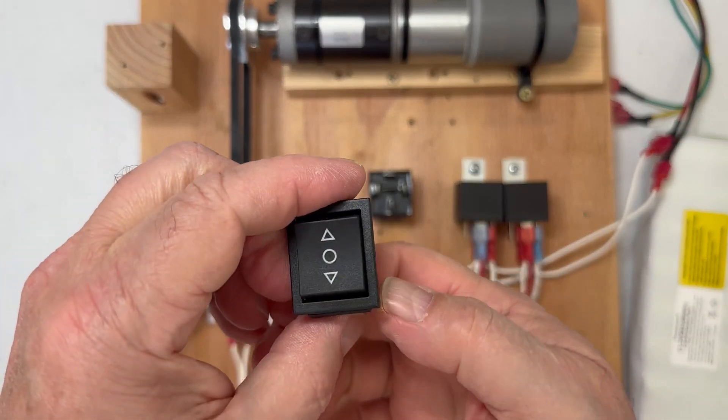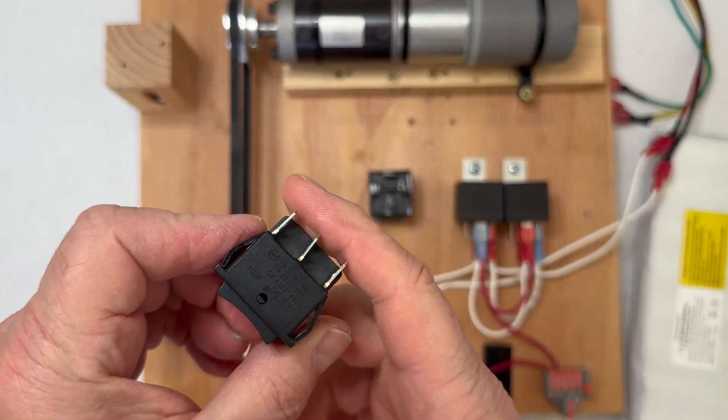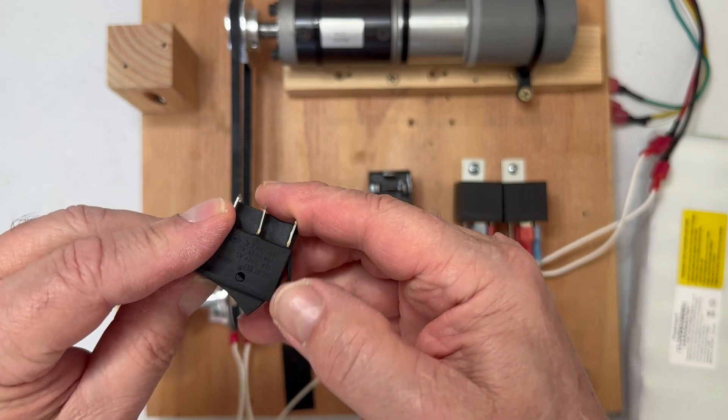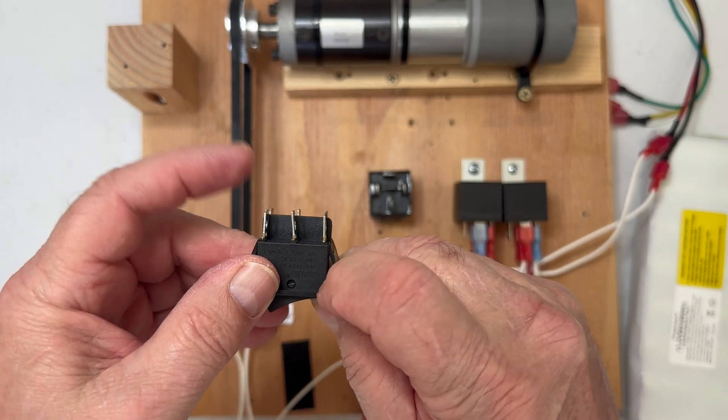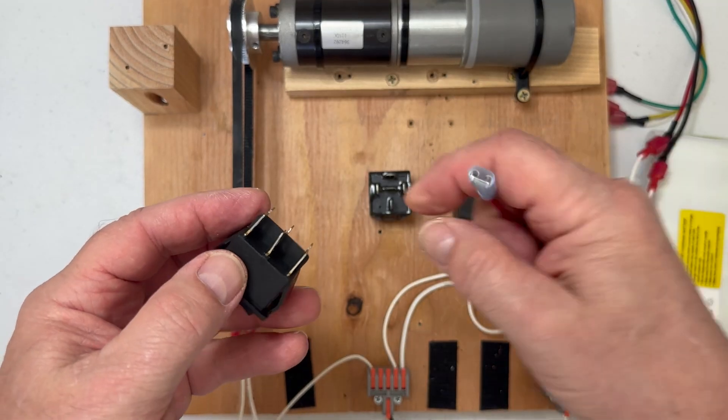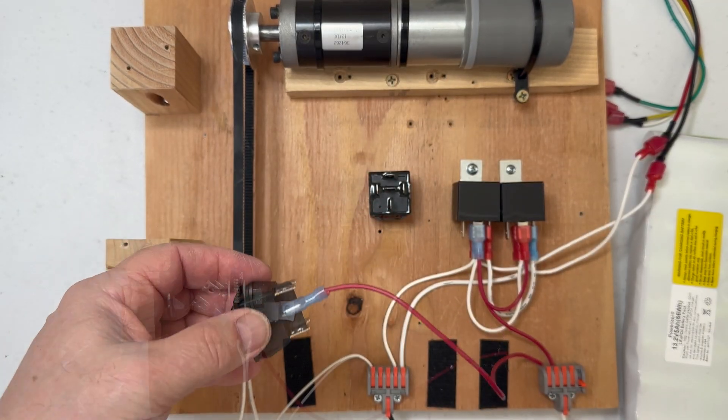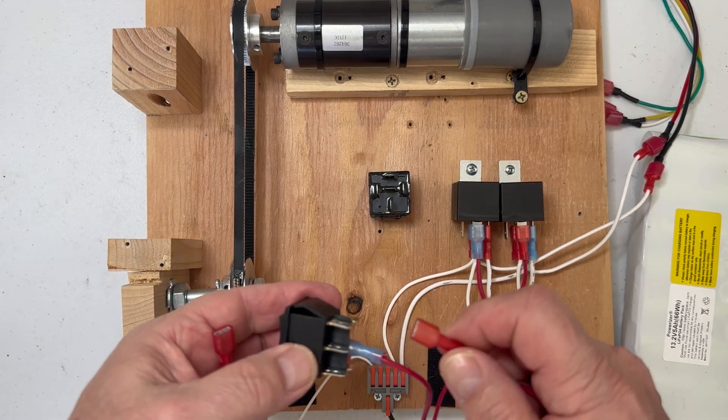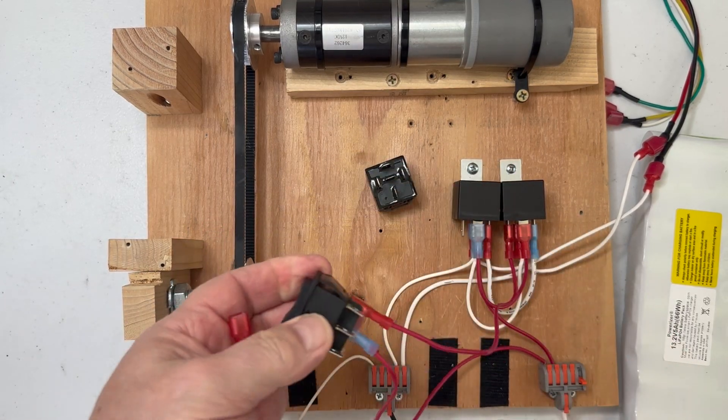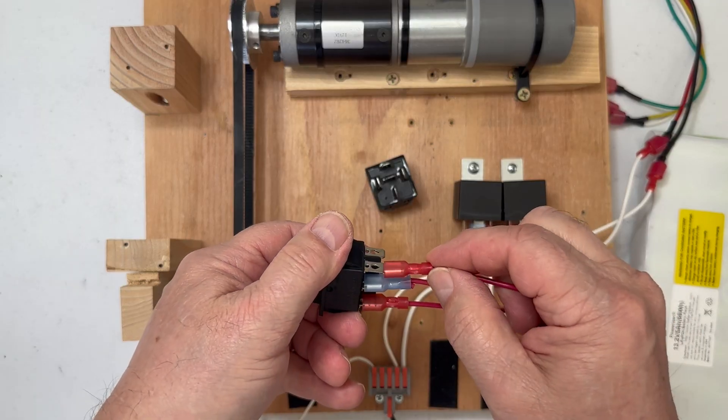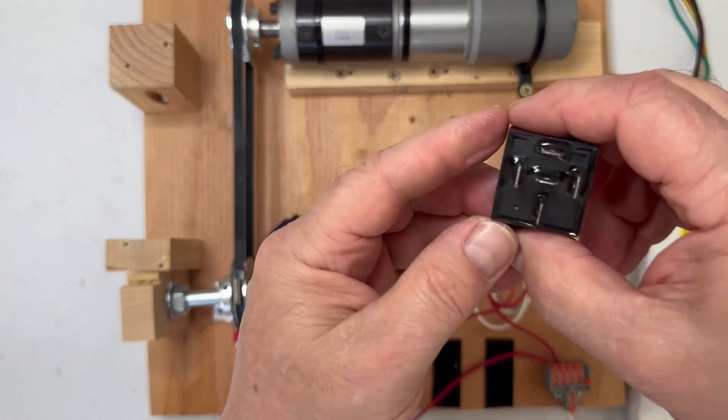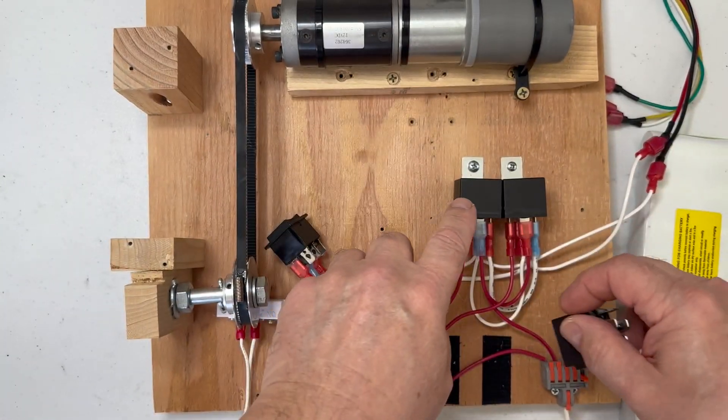We need a switch. I've got a double-pole double-throw, it's just what I had handy. We're only going to use one side of this. This is your common. When you push it one direction, positive will go out the other side. We're going to take this coming from our positive junction and put it in the middle. Then on one side we'll put it to this relay here. The other side put it to this relay here. I just put that on 86 on both of these relays.